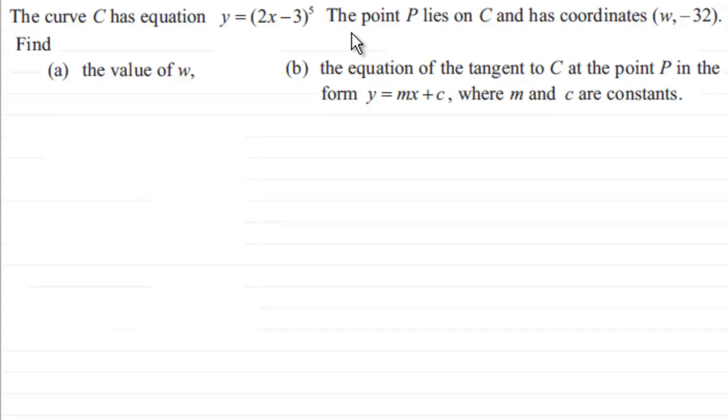We've got the curve C has equation y equals 2x minus 3 to the power 5. And we're told that the point P lies on the curve C and has coordinates w and minus 32. And what we've got to do is to find in part A the value of w and in part B the equation of the tangent to the curve C at the point P in the form y equals mx plus c where m and c are constants.